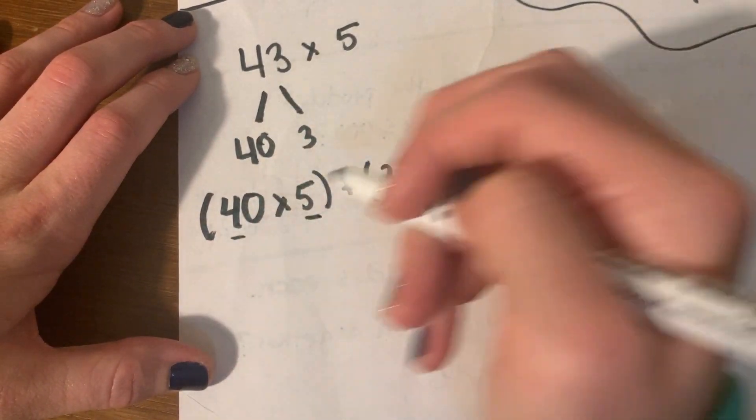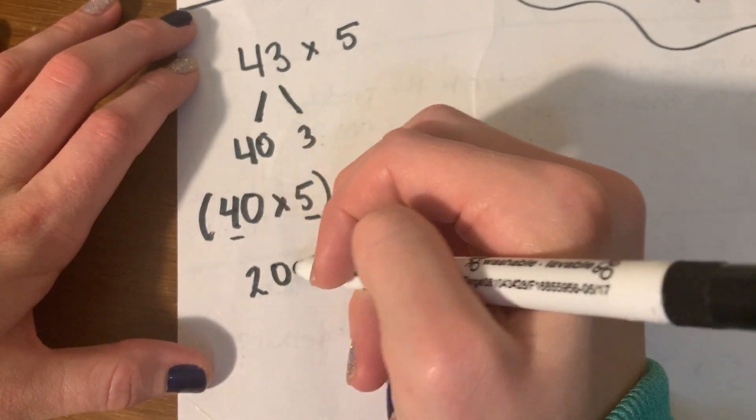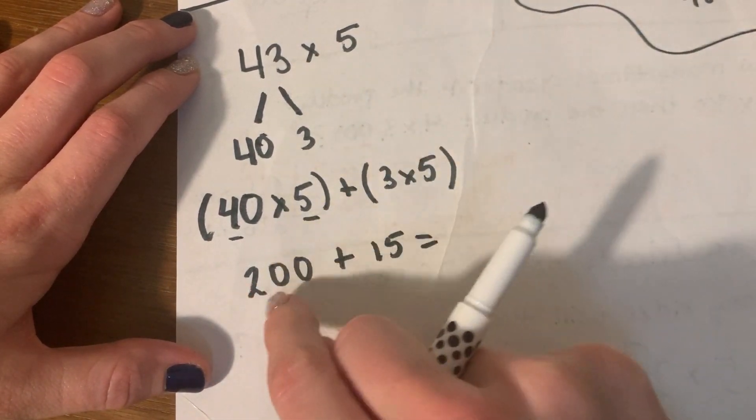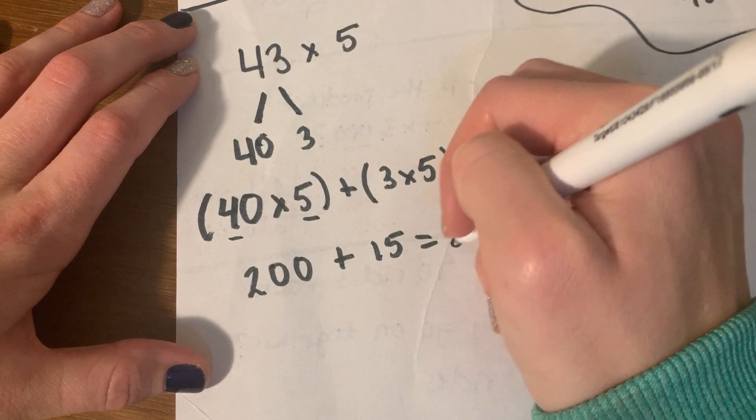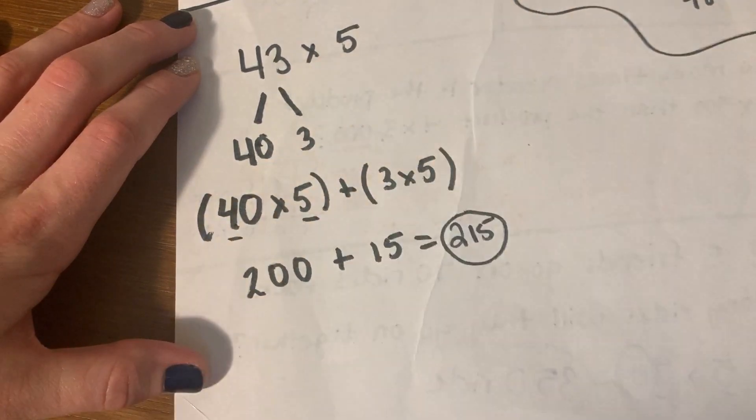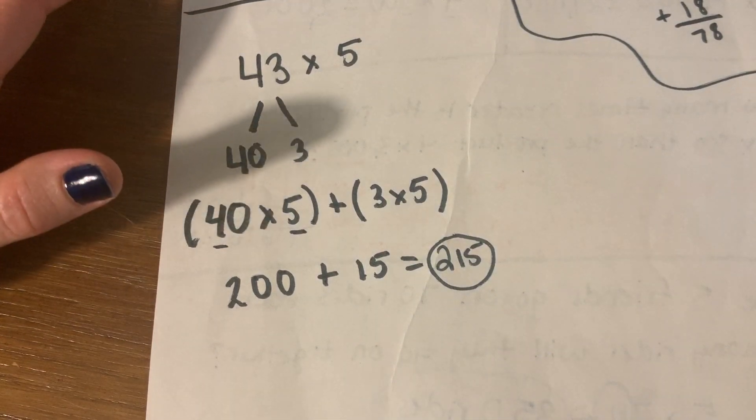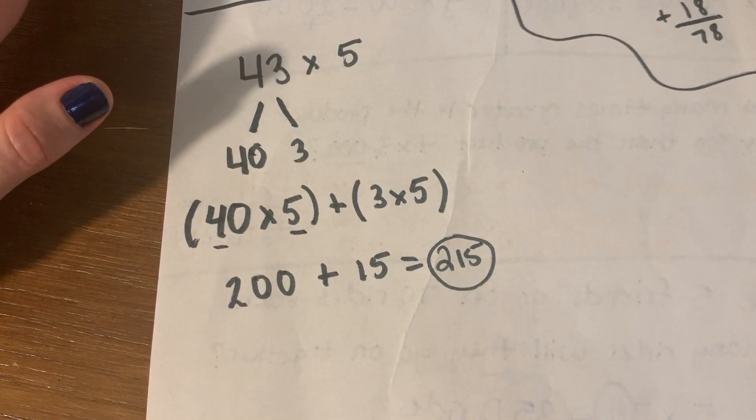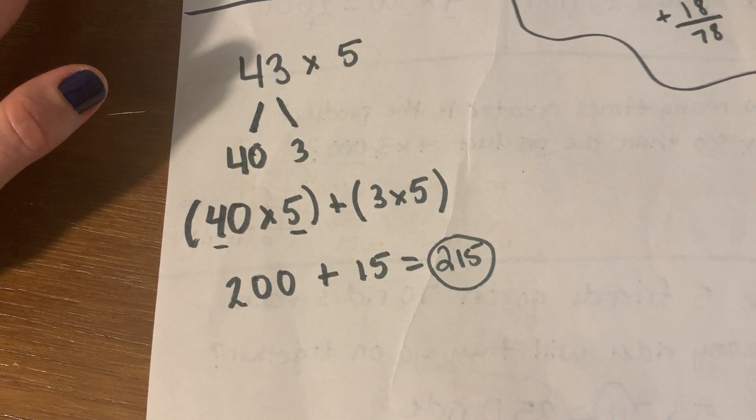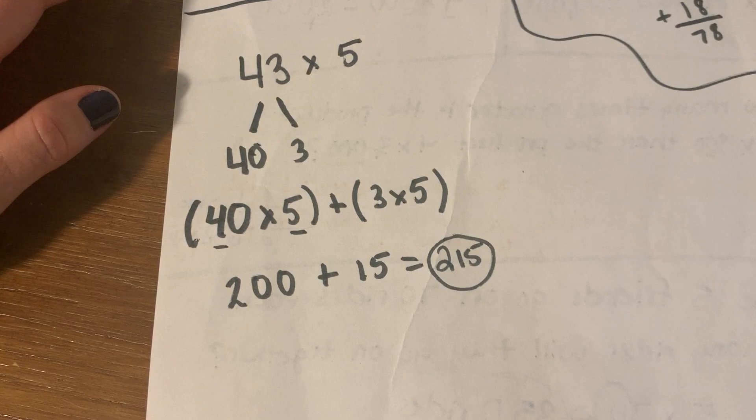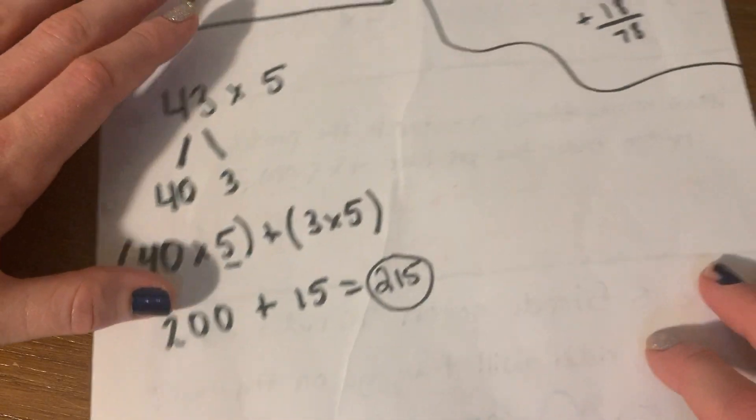Okay, 4 times 5 gives me 20. 40, tack on a 0 plus 3 times 5 gives me 15, gives me 215. All right, let's look at one word problem and then we'll go ahead and you guys can go ahead and do your own practicing. So the word problem I want to look at is this one.